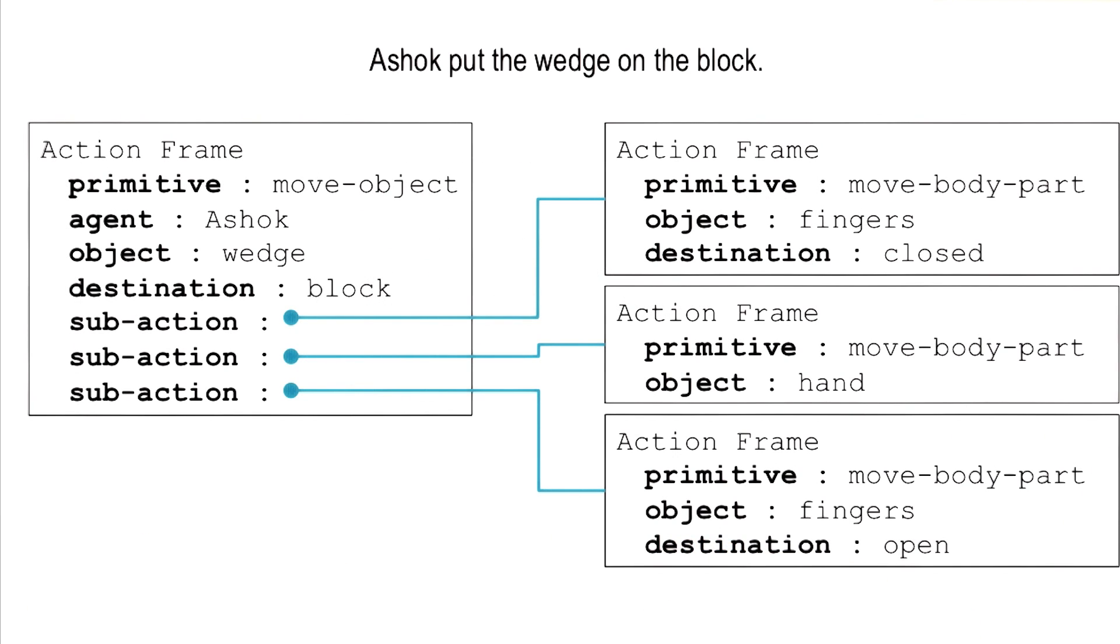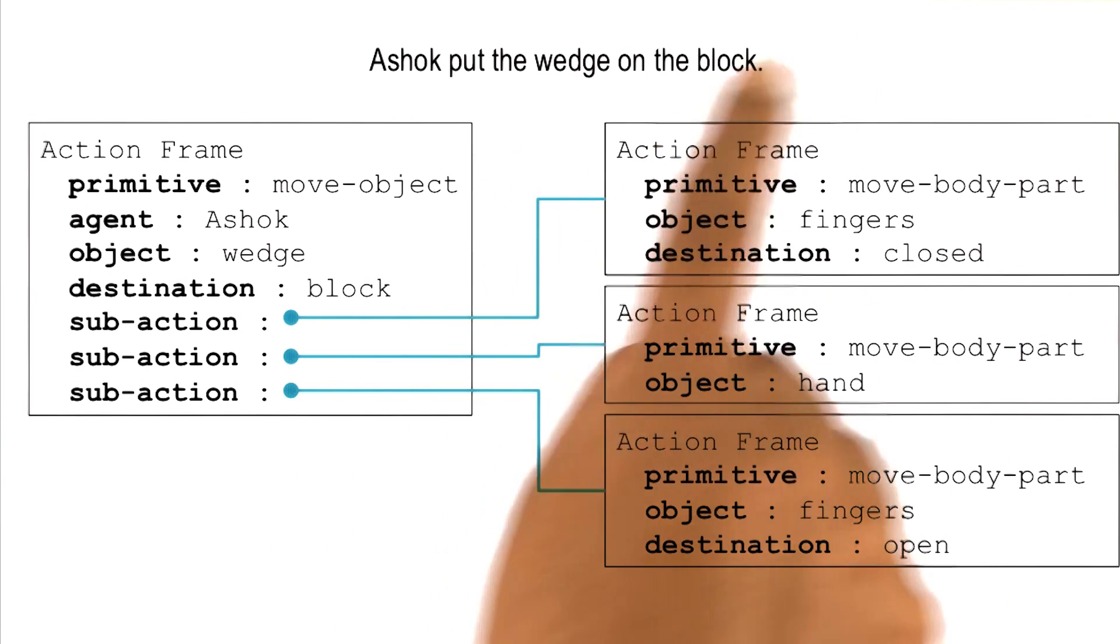So the question then becomes, what is the knowledge that the AI agent must have, so that it can in fact make the kind of inferences that we are talking about, common sense inferences.